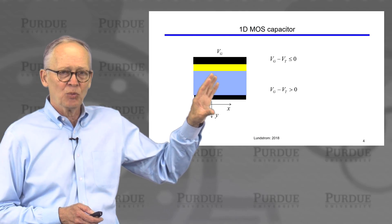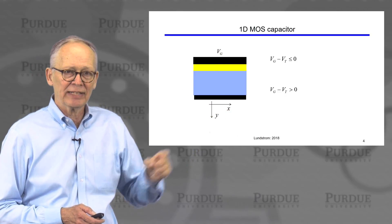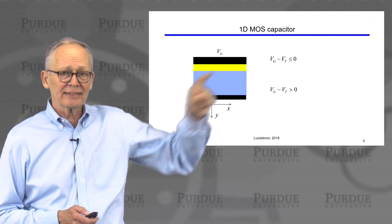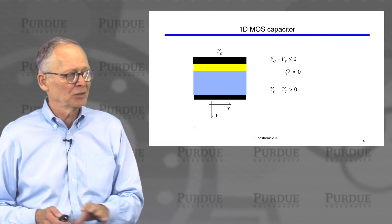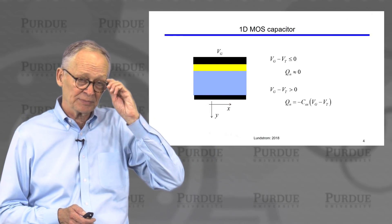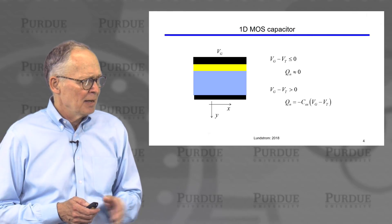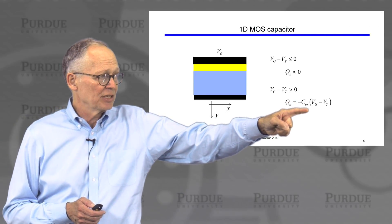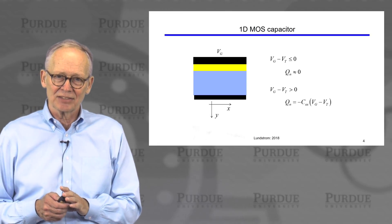Let's go to a simpler device first — a one-dimensional MOS capacitor with no variation in the x direction. If I apply a gate voltage, things vary in the y direction, normal to the gate. If the voltage is less than the threshold voltage, there is no charge — that's our approximation. In reality there's a small subthreshold charge, but for now we assume that below threshold there's no charge. Above threshold, the charge is negative (because there are electrons) and proportional to capacitance times voltage, as for any capacitor. This gives a simple expression for the mobile electron charge as a function of gate-to-source voltage.